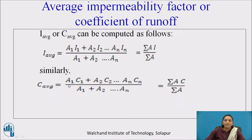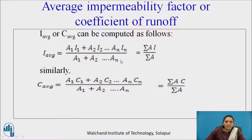The impermeability factor or coefficient of runoff for a mixed catchment can be calculated using the formula: (A1·I1 + A2·I2 + ...) / total area, that is, summation of (A·I) divided by summation of total area. This formula is the same for the coefficient of runoff.